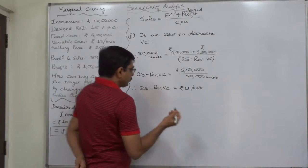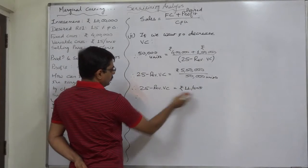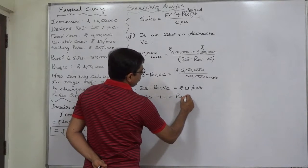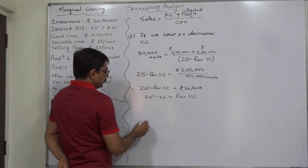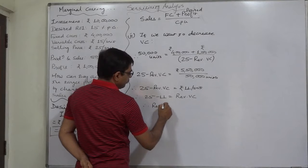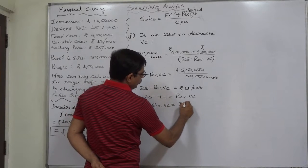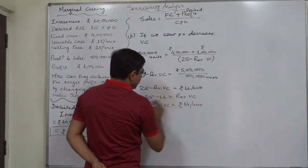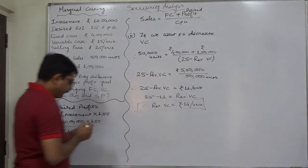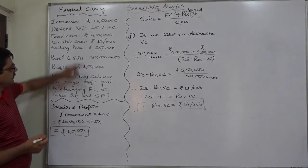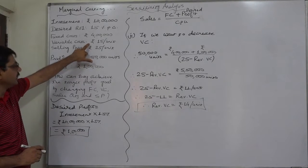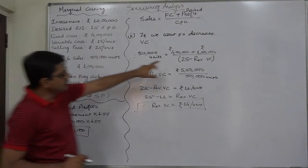Now we know that this 25 is also per unit amount, and revised variable cost will also be per unit amount. So 25 minus 11 will be the revised variable cost. So the revised variable cost comes to ₹14 per unit. Now we can say that if the management succeeds in reducing the variable cost from ₹15 to ₹14 per unit, they can achieve the target profit of ₹1,50,000.